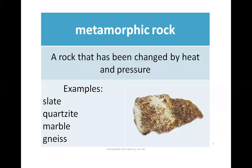Now let's take metamorphic rocks. Metamorphic rocks are formed by the transformation of igneous and sedimentary rock — a rock that has been changed by heat and pressure. When igneous and sedimentary rocks are subjected to extreme heat and pressure, they change into metamorphic rocks. Examples include marble, slate, quartzite, and gneiss.